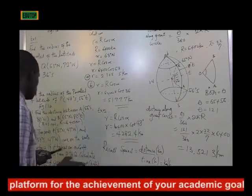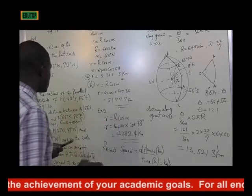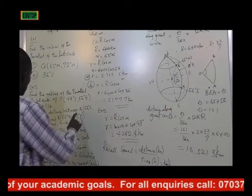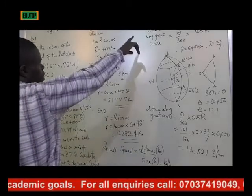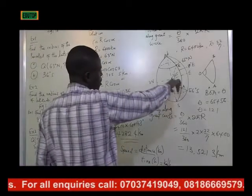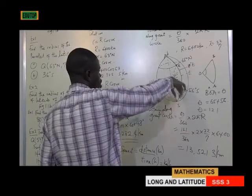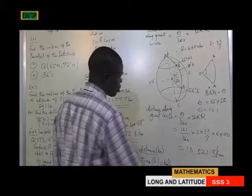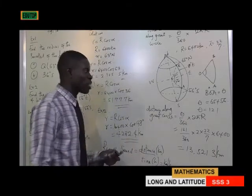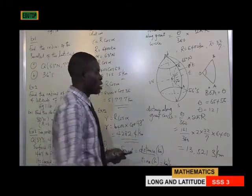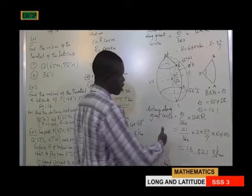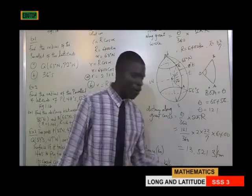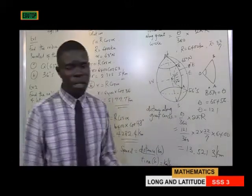That is example 1. We were asked to find the distance between point A and point B. The distance is along the longitude, and since it is along the longitude, it is also distance along a great circle. The formula is θ/360 × 2πR, and our answer is 13,521.3 km.